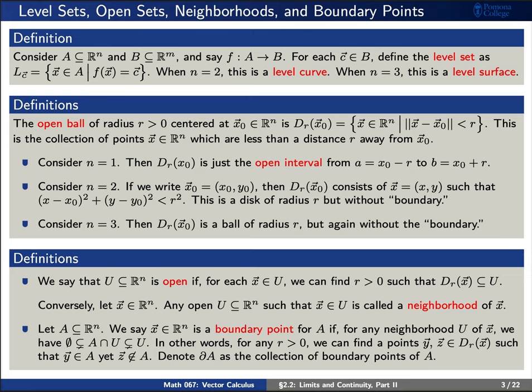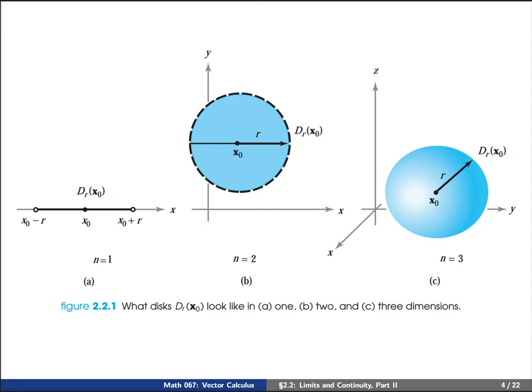Here are some graphical examples of what we discussed. These are all examples of open balls D_r of x₀. In figure A, you'll see what happens when n is equal to 1 — this is simply the open interval from x₀ minus r to x₀ plus r. When n is equal to 2, figure B shows a disk of radius r centered at x₀ with a dashed line because we don't include the boundary. You can see a similar picture in figure C when n is equal to 3.